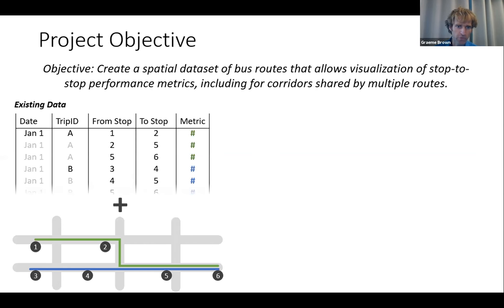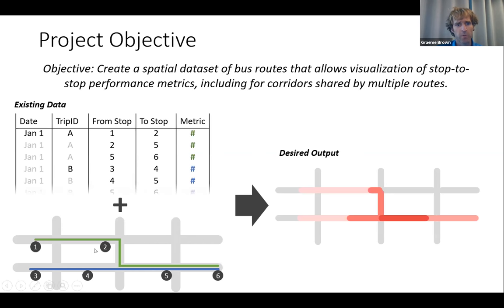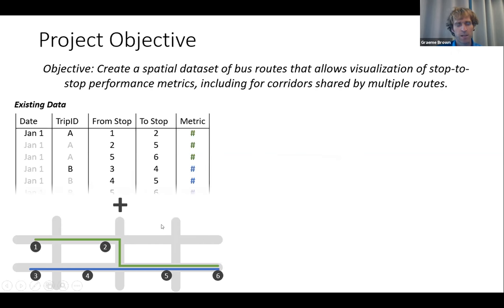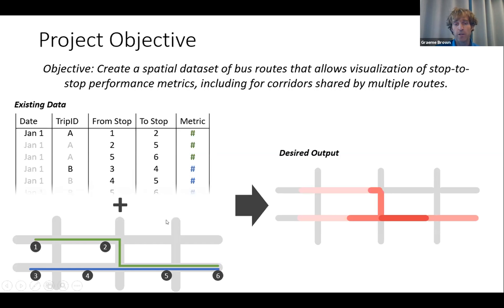We have our road network and bus stops, and you can see that these two routes happen to overlap for a portion of one segment and for the entirety of another. The desired output sums metrics for those overlapping routes — we don't want multiple overlapping line features that obscure each other. We want to look at the road network and know how many people, how many vehicle kilometers, what speed, aggregated across all services traversing each road section.